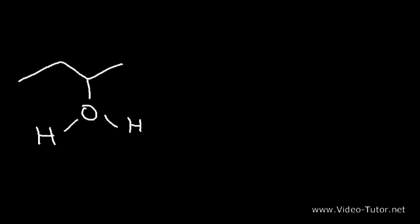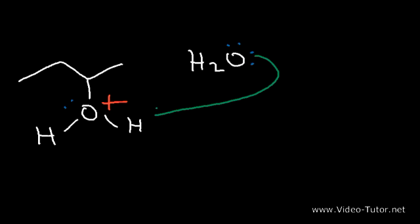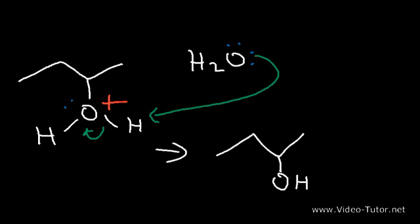After water combines with the carbocation, we're going to get an intermediate — an oxonium species. Whenever oxygen has three bonds it's going to have a plus charge. So we need to use another water molecule to remove the hydrogen from the oxygen, and that's how we're going to get 2-butanol. Keep in mind we're going to get a mixture of stereoisomers — we're going to get the inverted product and the retention product.